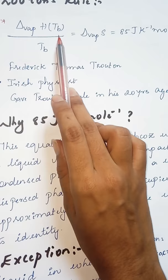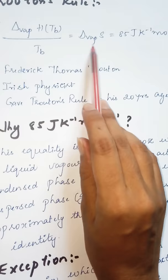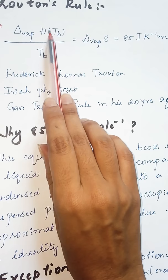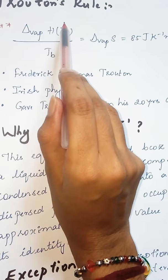So what basically this rule says is, as we have seen the definition of entropy of vaporization, that value is equal to 85 Joule K inverse mole inverse. That is, Δvap H / boiling temperature = 85. This is not like into, don't consider it as into Tb.